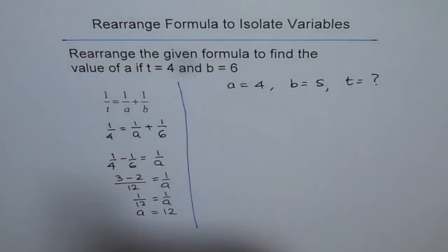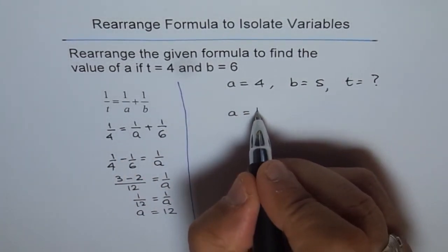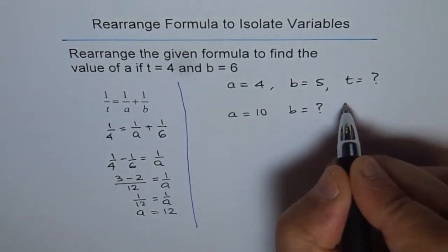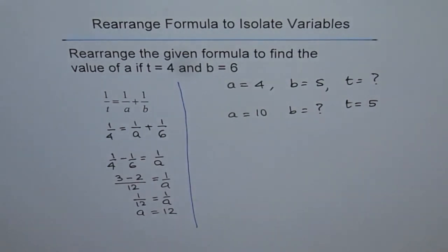And similar to this, I can say if A equals 10 and we need to find B given that T equals 5, what should B be?